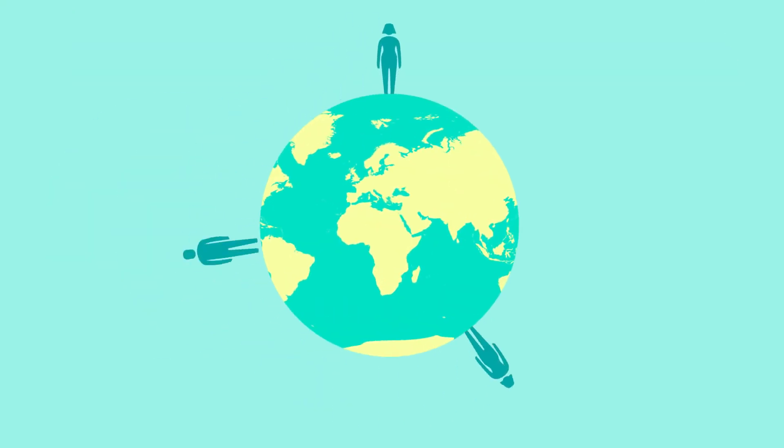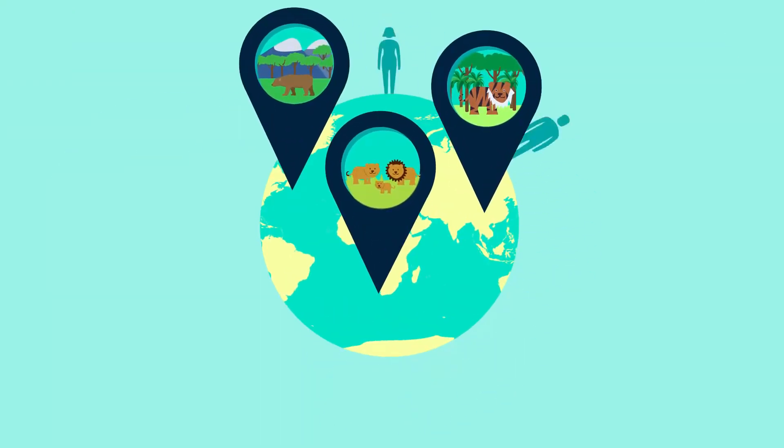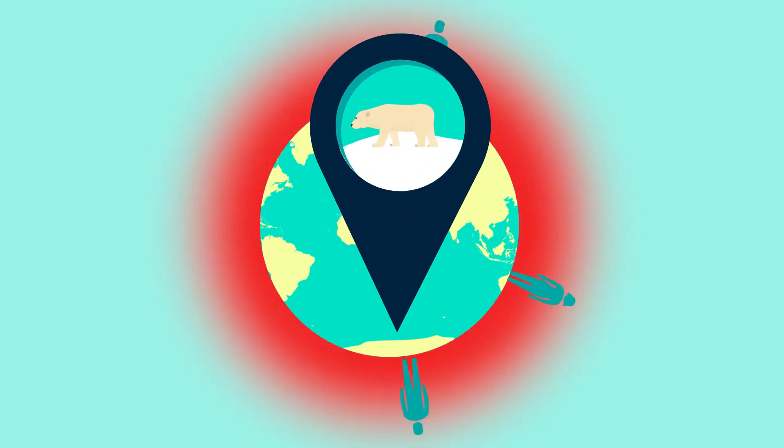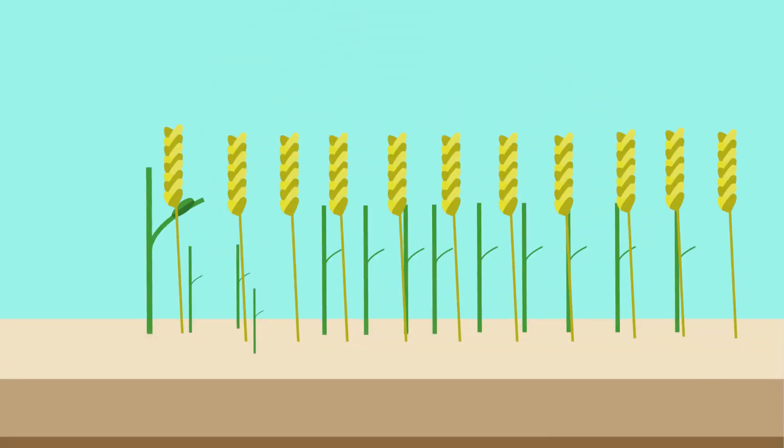While humans aren't responsible for all of the current extinction events, there is good evidence to suggest that humans are affecting the world on a global scale and causing the loss of many important species. The loss of biodiversity could have catastrophic effects on our society and even result in the loss of our food crops.